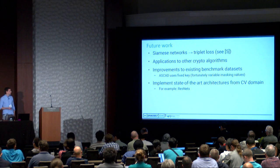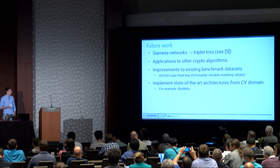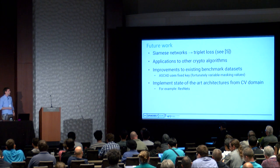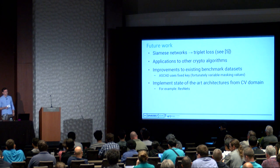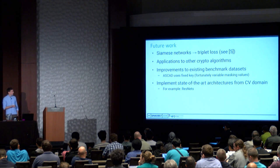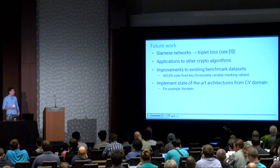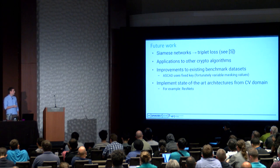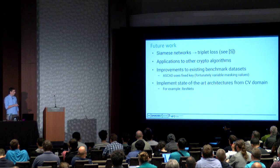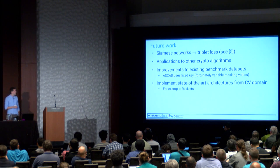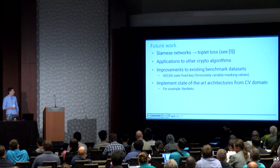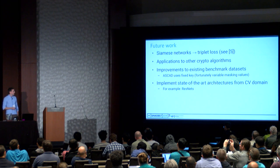For future work: looking at the computer vision domain, Siamese networks are another way of training a neural network that achieves very good results—similar principles may increase performance in the side channel domain. It would also be interesting to apply these techniques to other crypto algorithms, such as RSA. Improvements to existing datasets are also worth considering; the ASCAD authors have now randomized the key to make it more realistic. Finally, implementing state-of-the-art architectures from the CV domain, such as ResNets, would be very interesting and has not been seen much in current side channel literature.